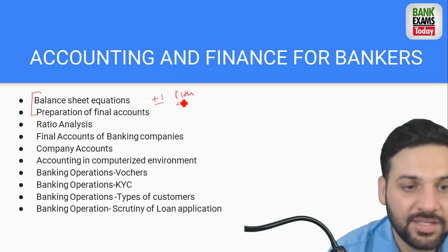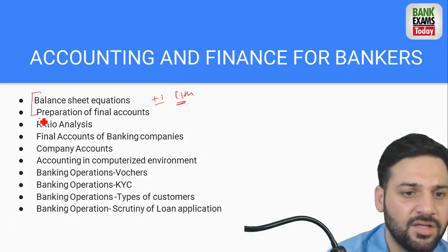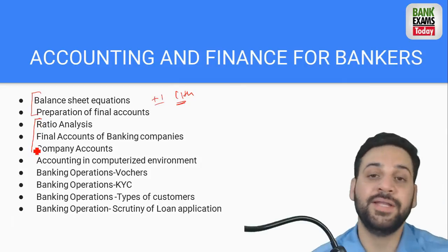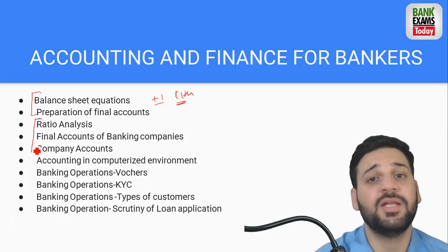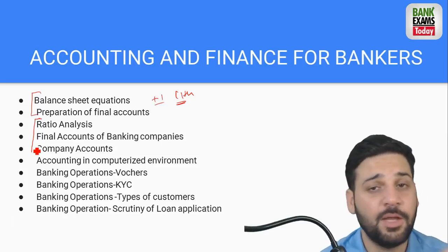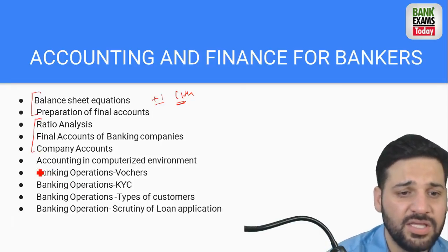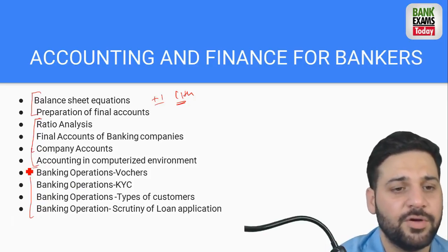Ratio analysis is very easy. Final accounts of banking companies, company accounts — don't go in-depth, don't solve large questions. Look at previous year papers — the paper is very easy. Banking operations don't come much. This is all very important in this paper — so let's move to the Legal paper now.